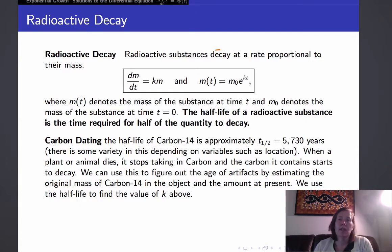m of t then, of course, is a solution to this equation, so it's of the form m0 times e to the kt, where m0 is the mass of the substance at time t equals 0.